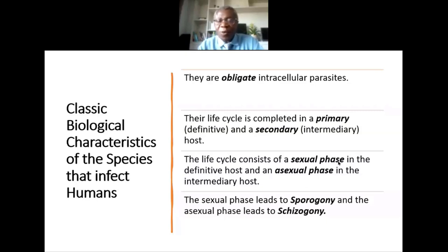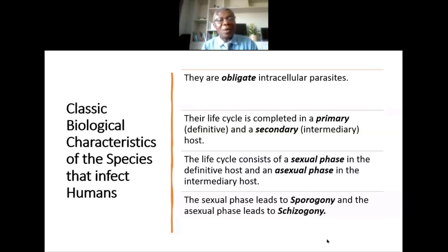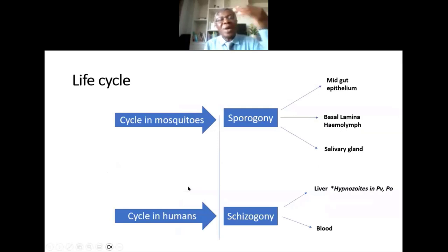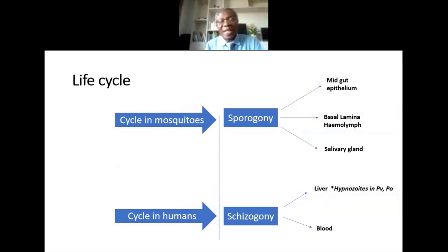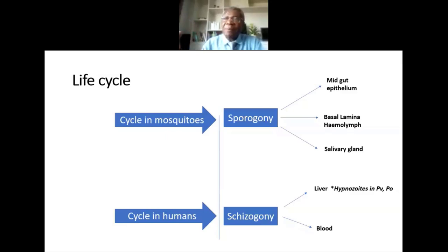The sexual phase of the life cycle is referred to as sporogony, and the asexual phase is called schizogony. In the mosquito cycle, a feeding mosquito picks up male and female gametocytes. These are taken into the midgut epithelium, where fertilization occurs between the male and female gametes. The male gamete undergoes exflagellation, where DNA exits the cell and fertilizes the macrogamete of the female to form a zygote in the midgut.